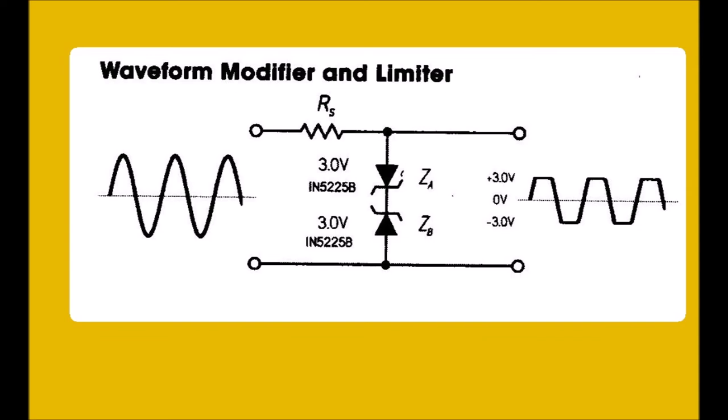Anyway, the next example is the waveform modifier and limiter. And I drew this picture up myself. Two opposing Zener diodes act to clip both halves of an input signal. Here a sine wave is converted to a near square wave. Besides acting to reshape a waveform, this arrangement can also be placed across the output terminal of a DC power supply to prevent unwanted voltage transients from reaching an attached load. The breakdown voltages in that case must be greater than the supply voltage, but smaller than the maximum allowable transient voltage.